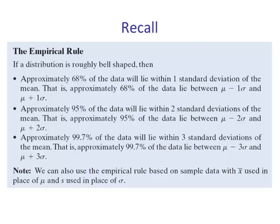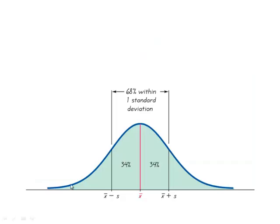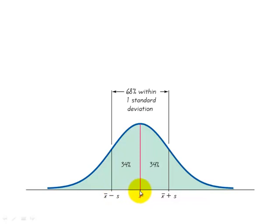Let's look at a visual. The distribution is roughly bell-shaped like this one. We expect the majority of the data — approximately 68% — to be within one standard deviation below the mean and one standard deviation above the mean. So this will be about 68% of the data.